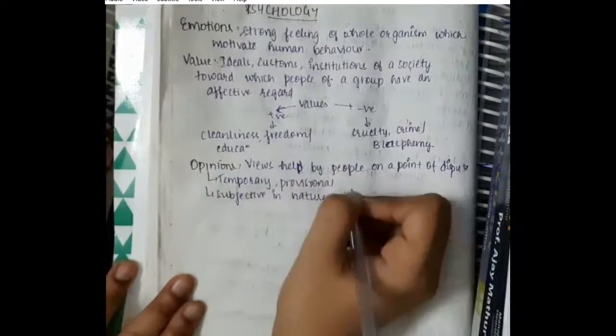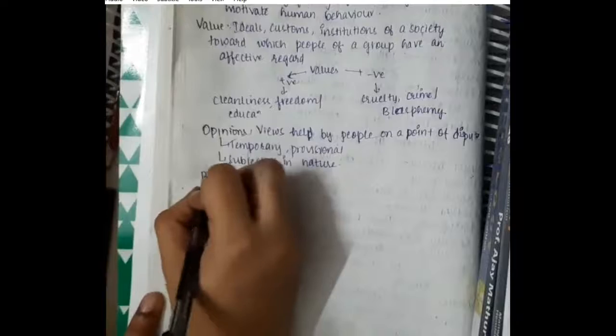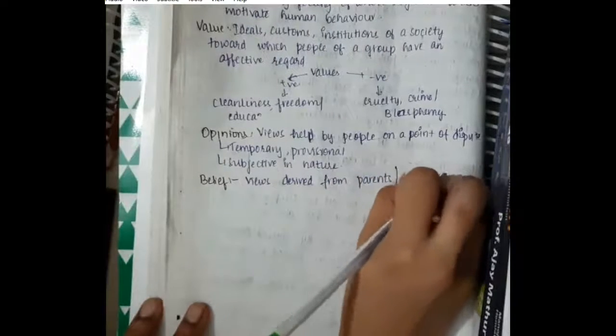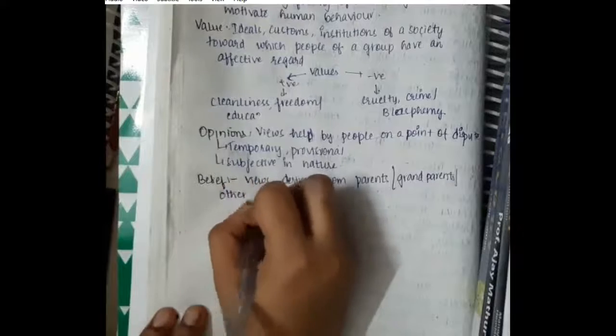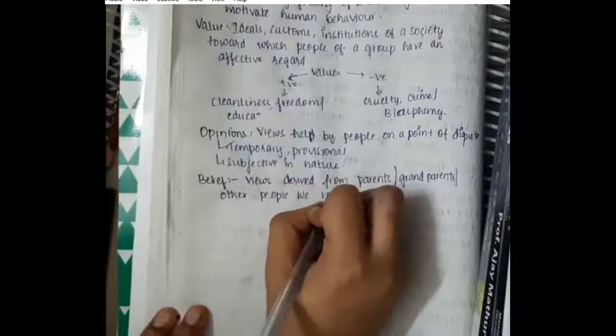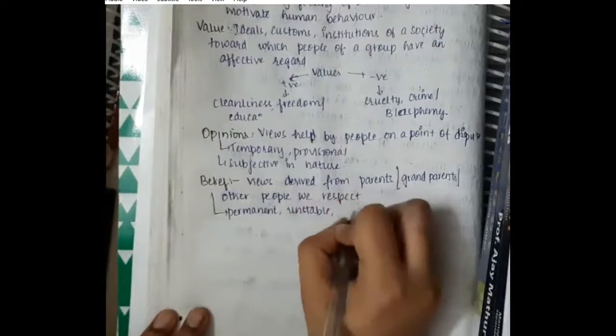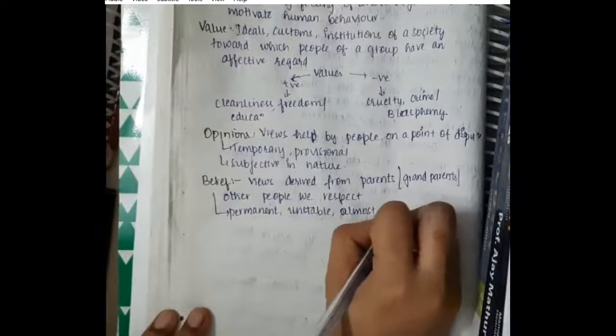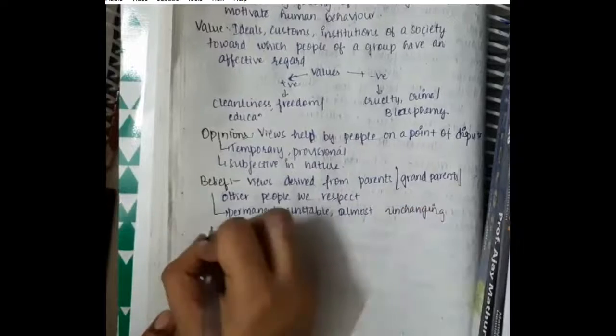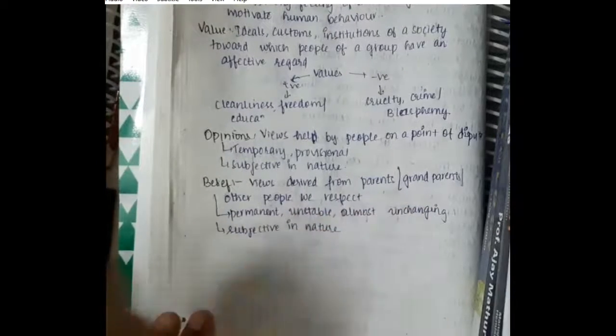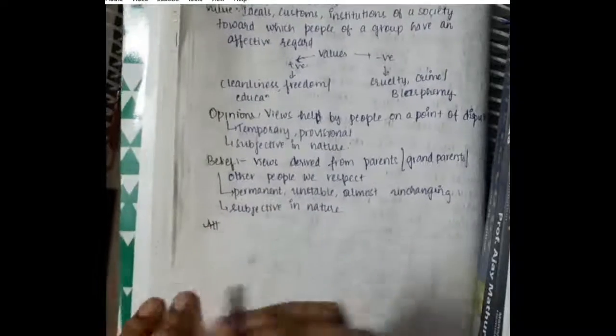Then we have beliefs. Beliefs are the views which are derived from parents, grandparents, or other people we respect. Belief is permanent, unstable, and almost unchanging. Belief is subjective in nature.